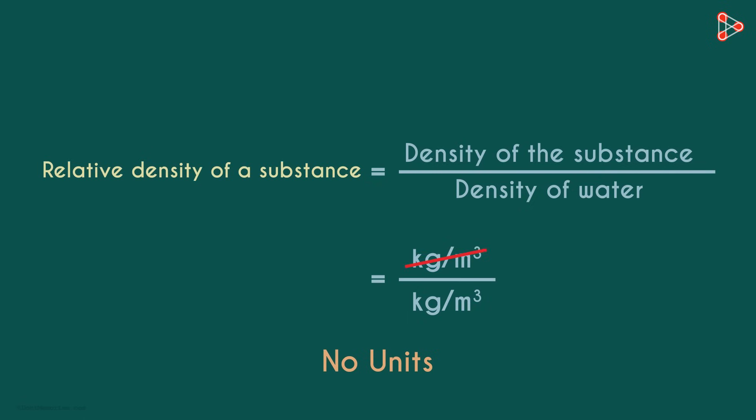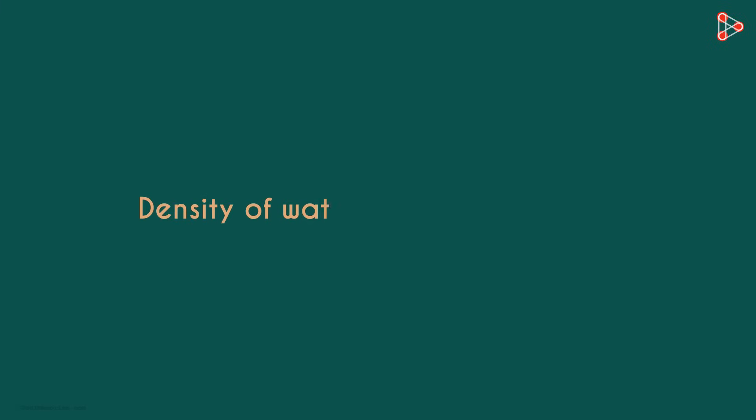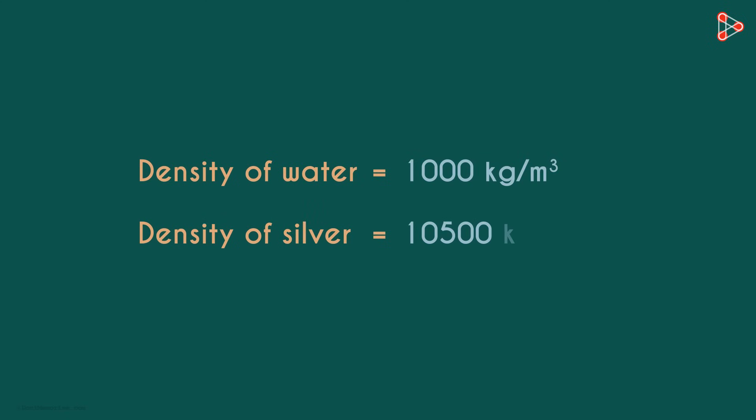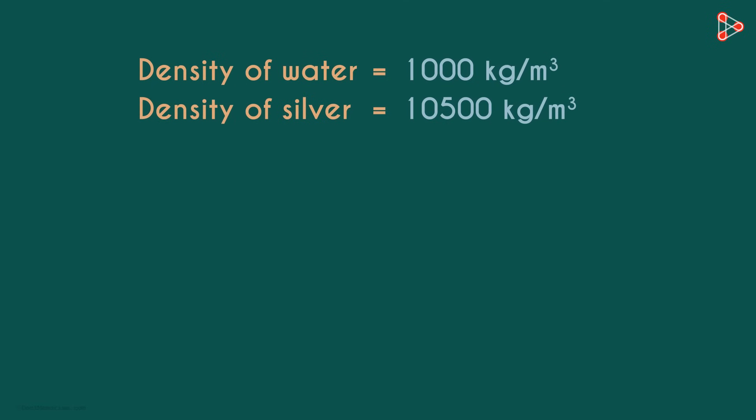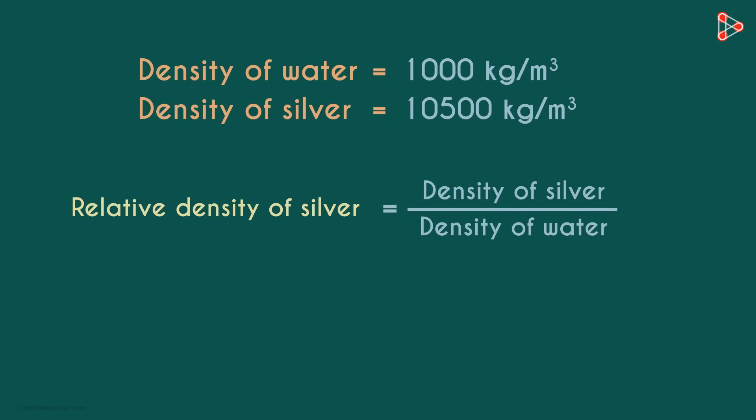The units from the numerator and denominator cancel each other out. The density of water is 1000 kilograms per meter cubed and the density of silver is 10,500 kilograms per meter cubed. So can you tell me the relative density of silver? It's easy. Just refer to this formula and try answering it.